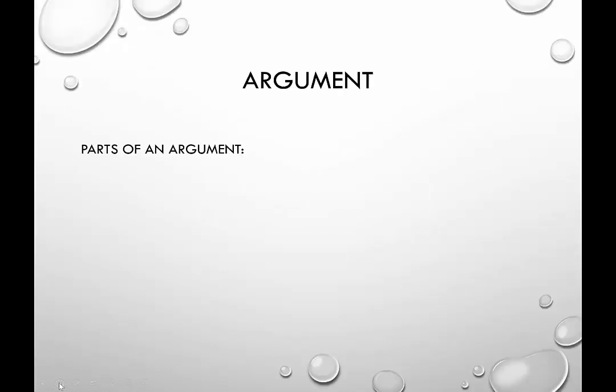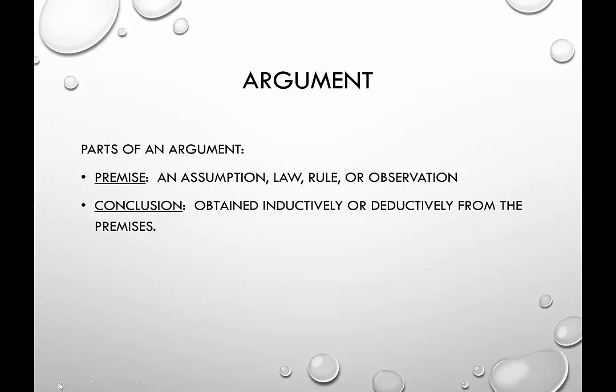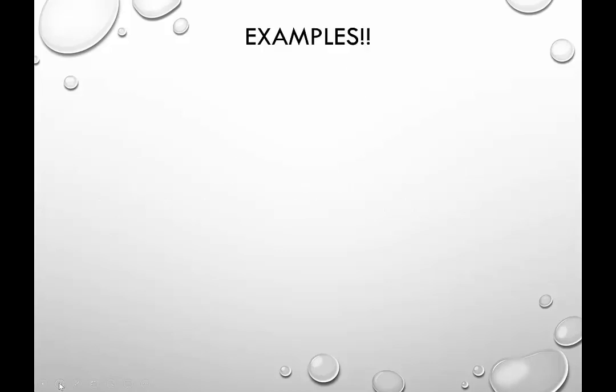First, what is an argument? Well, an argument has two parts: a premise — that's an assumption, law, rule, or observation — and a conclusion. A conclusion is something that's obtained inductively or deductively from the premises. Just be aware that based on whatever textbook, professor, or teacher you have, they might use different words, but generally there's the first part and the second part. The premise and the conclusion is what we're going to use here.